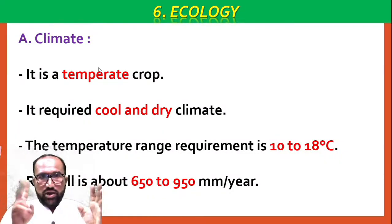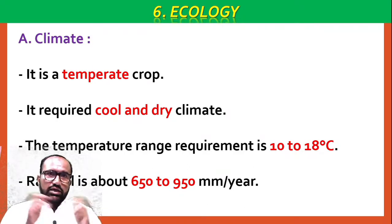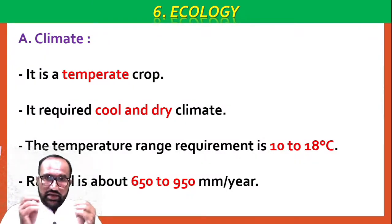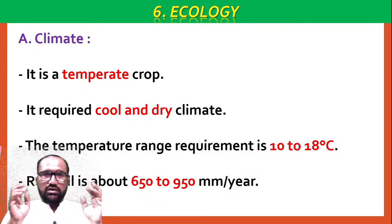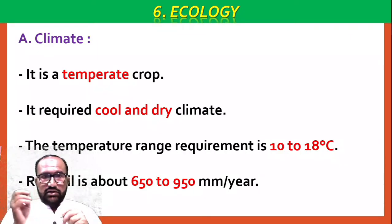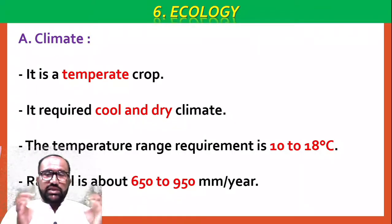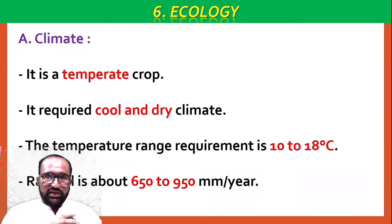Under Ecology, there are two points: Climate and Soil. Climate: Pea crop is a temperate crop. It requires a cool and dry climate. The temperature range requirement is 10 to 18 degrees Celsius. Rainfall required is about 650 to 950 mm under rain-fed cultivation.